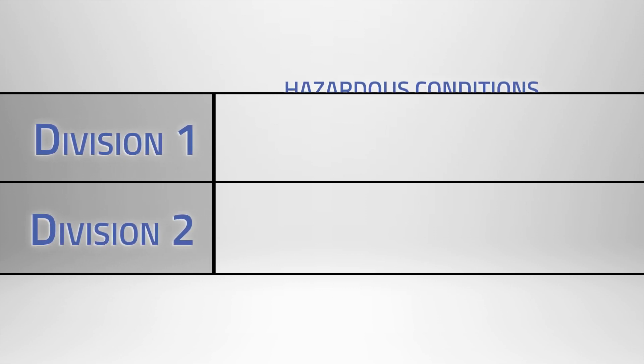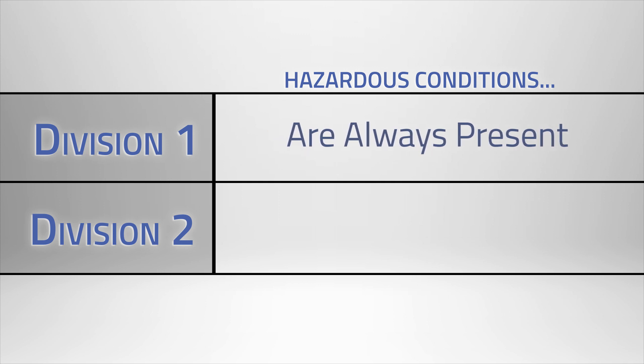Under a class there are also two divisions. In Division 1 environments, hazardous conditions are always present. And in Division 2 environments, hazardous conditions may be present.